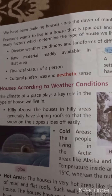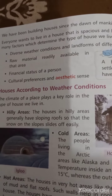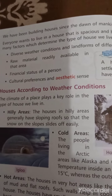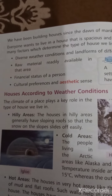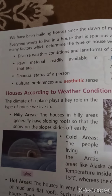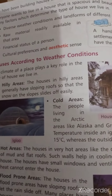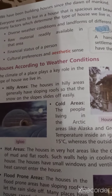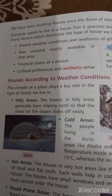Fourth factor is cultural preference and aesthetic sense. Aap kis religion se belong karte hai, yeh bhi aapki house ki structure ko influence karta hai. Houses according to weather condition include: hilly areas, hot areas, flood prone areas, earthquake prone areas, coastal areas, and movable houses.